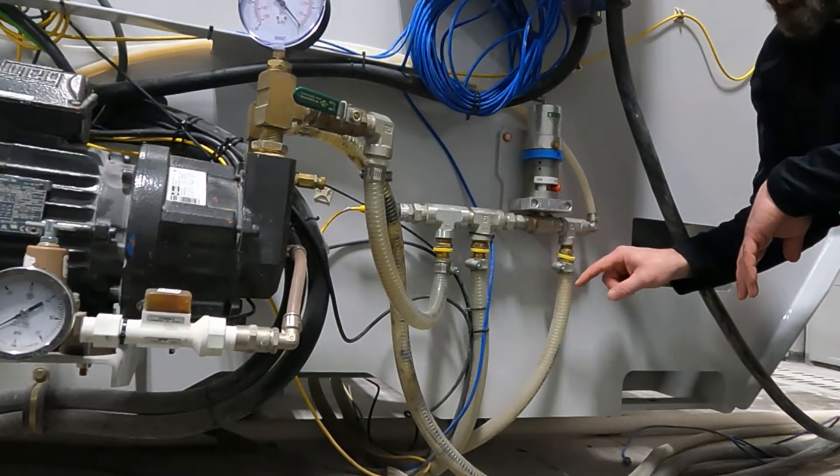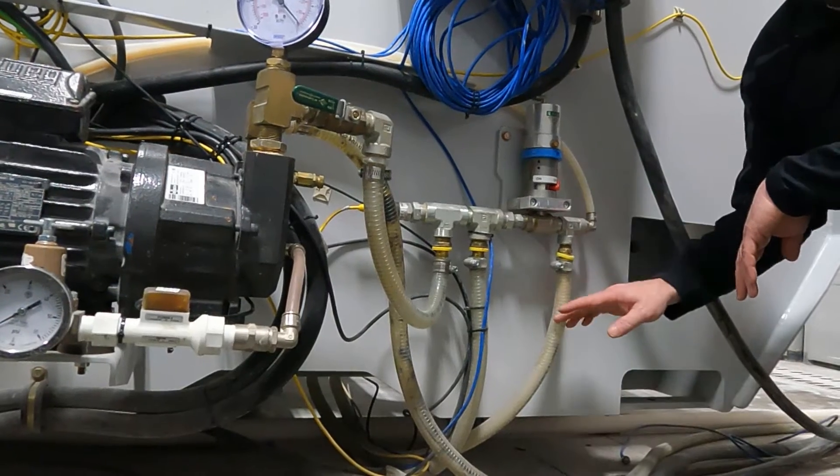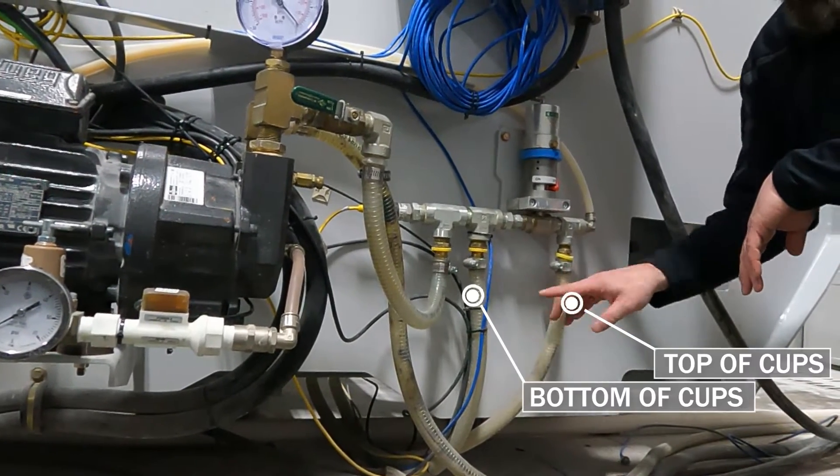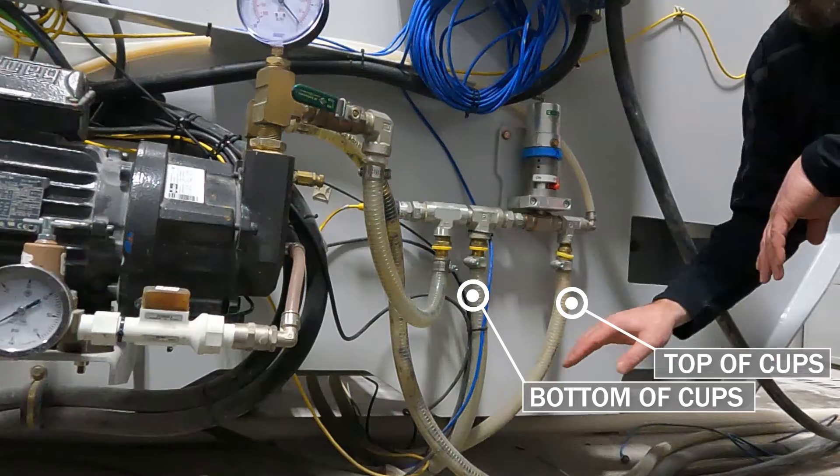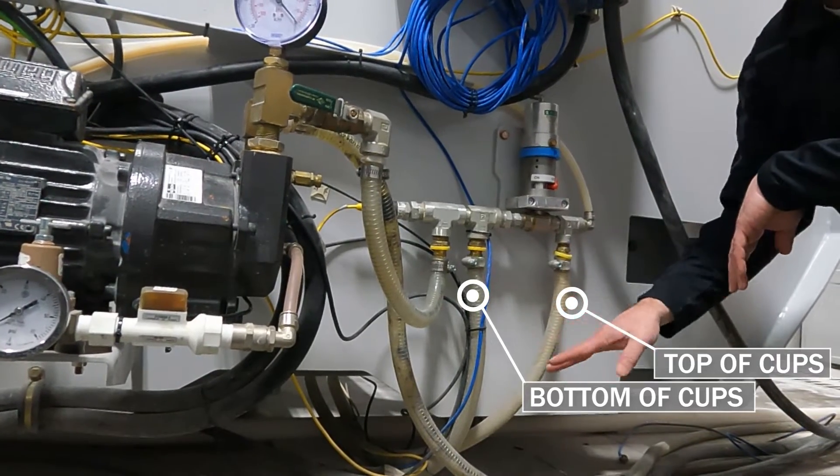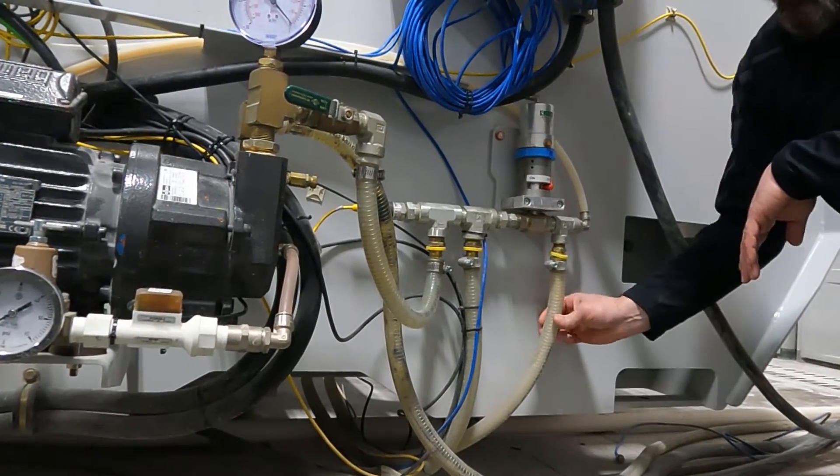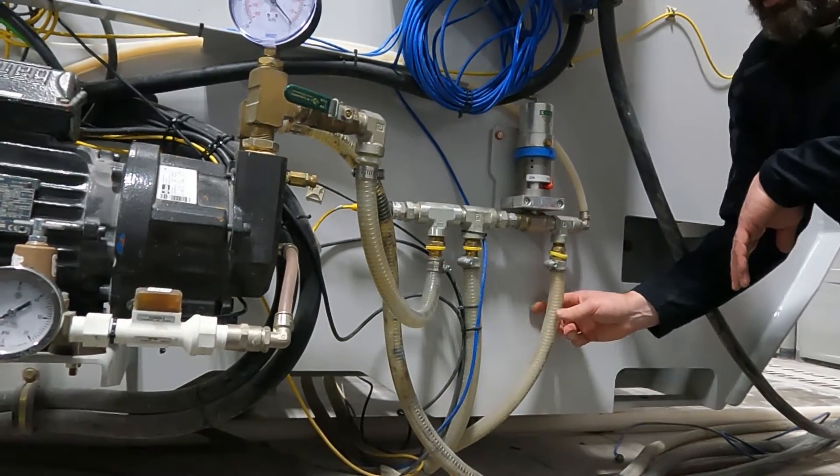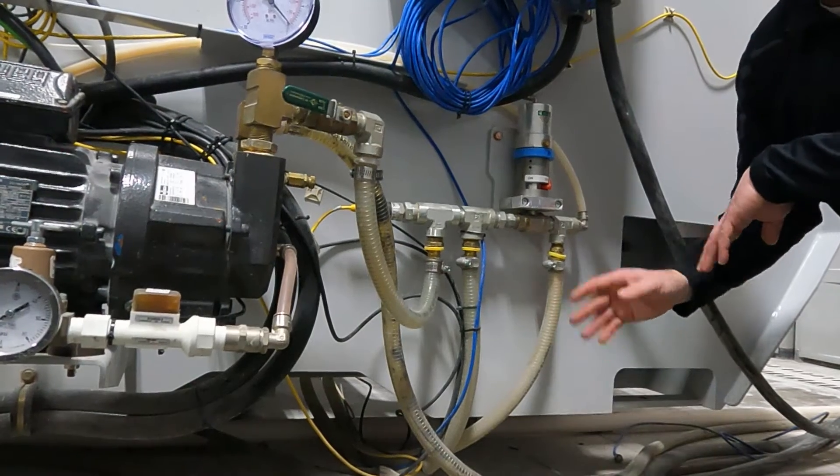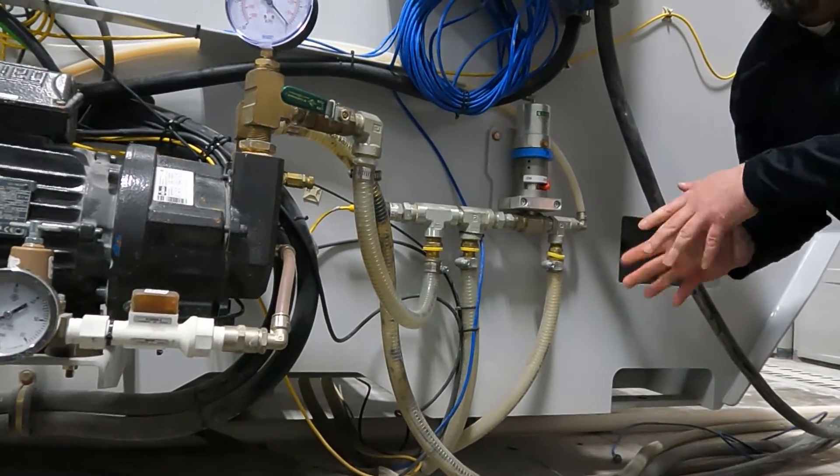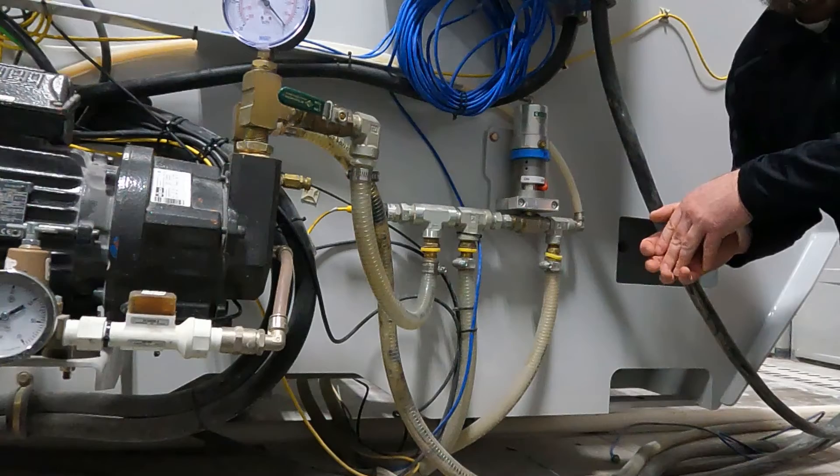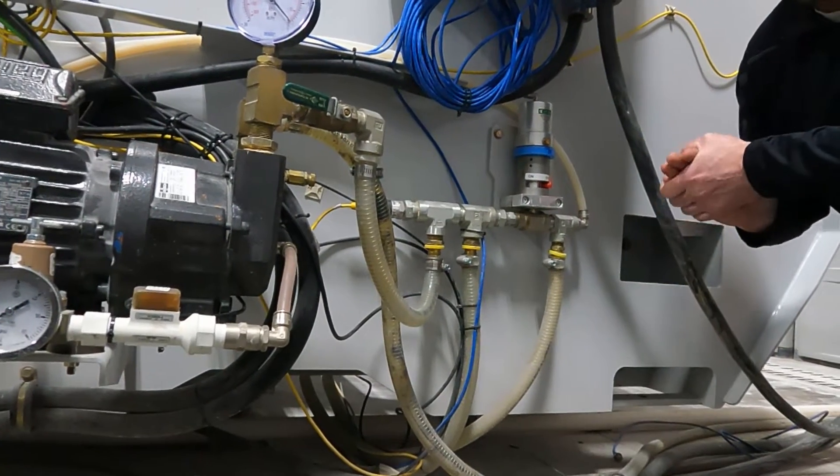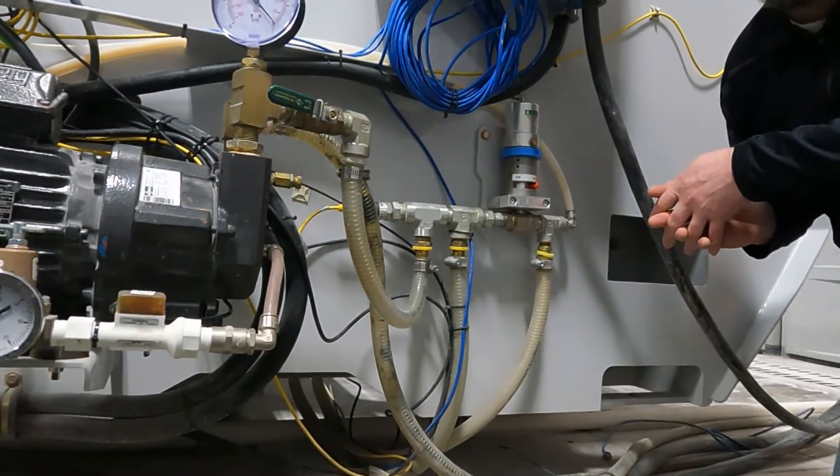The next step would be to inspect our lines going out to our manifold. So we're going to follow these two lines here. These are supply lines going out to each manifold, making sure we do not have any holes or anything in our lines. Once we inspect all them, our next step would be up by the table. So we are going to reposition here and show you up by our table and our manifolds what you need to look for.